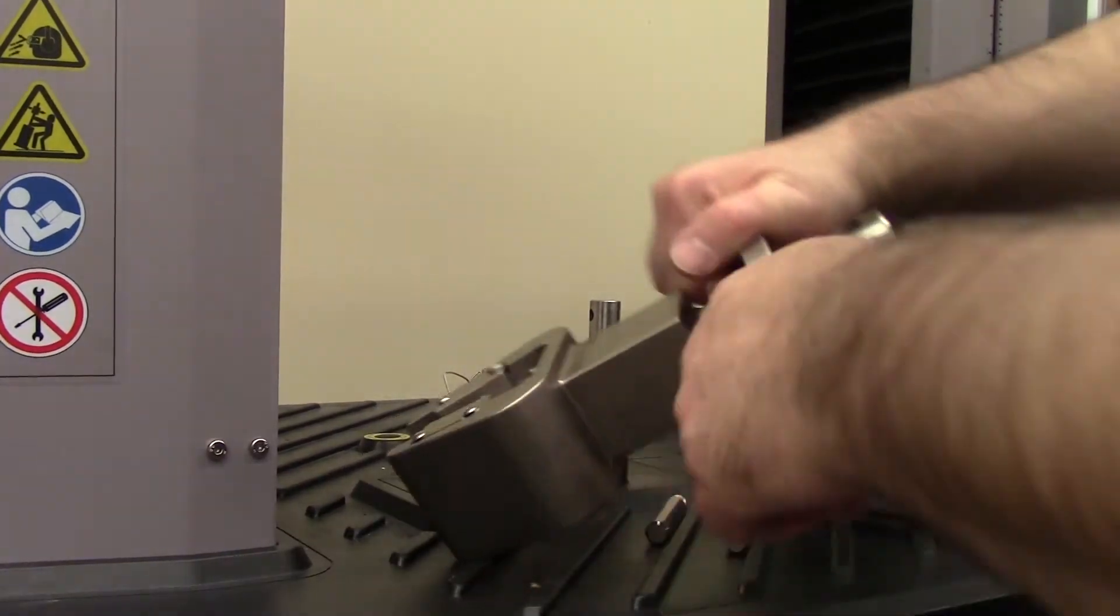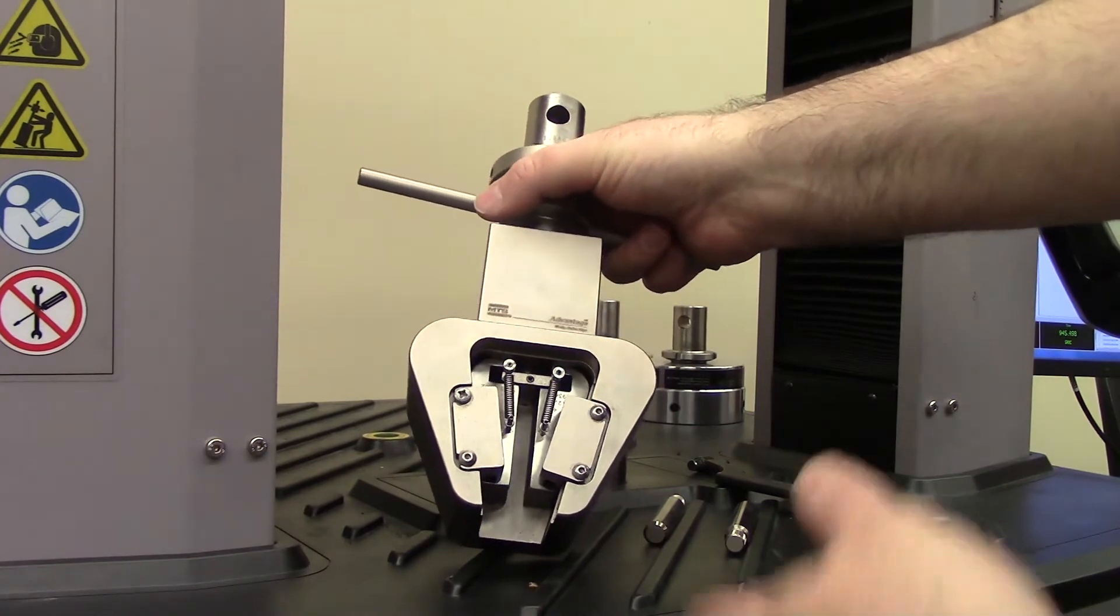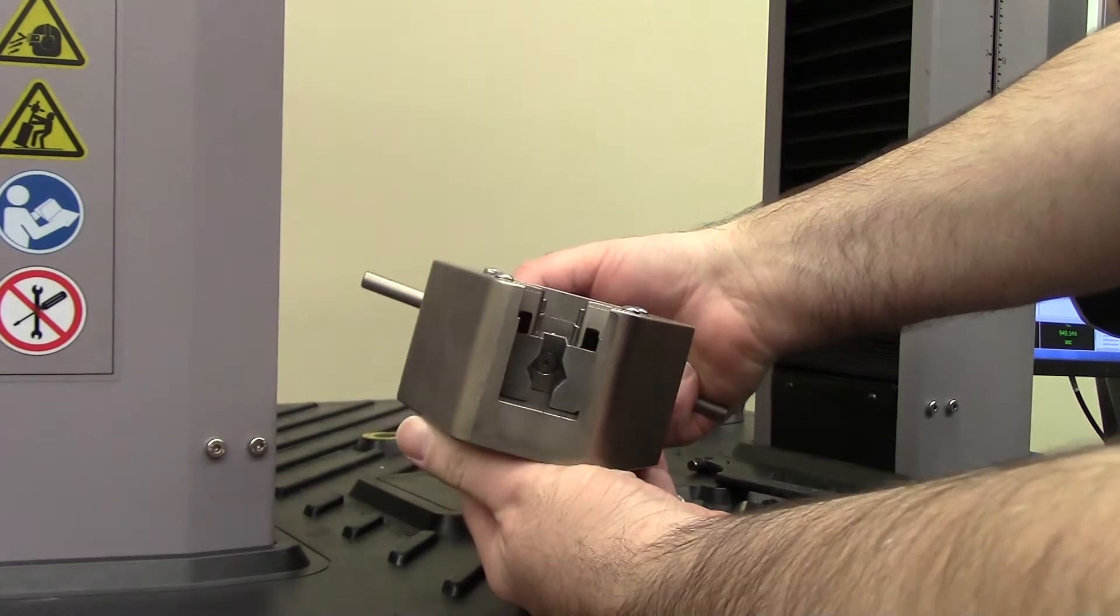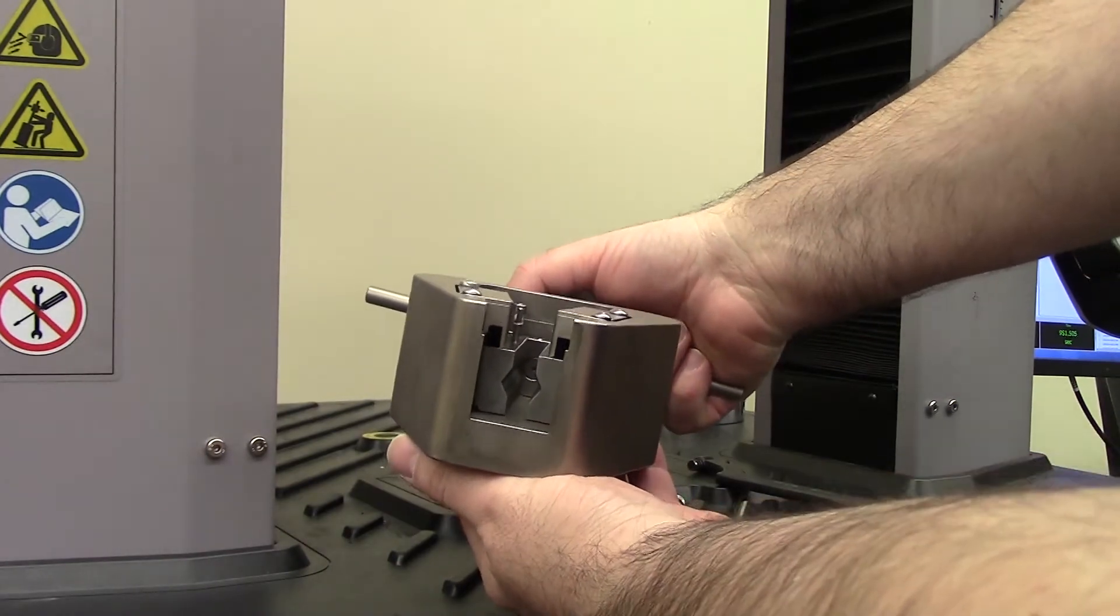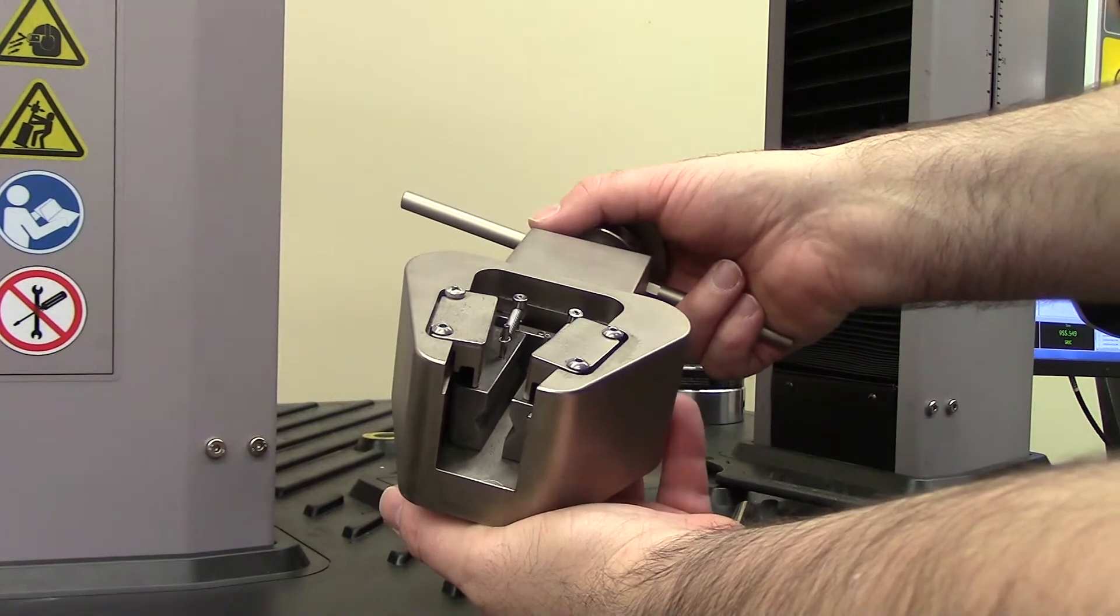We have the grips and wedges installed. This is an MTS mechanical wedge grip, and these are the inserts, the grip faces, or the wedges. They're set up now for a round specimen and there's a specification that goes up to half an inch.